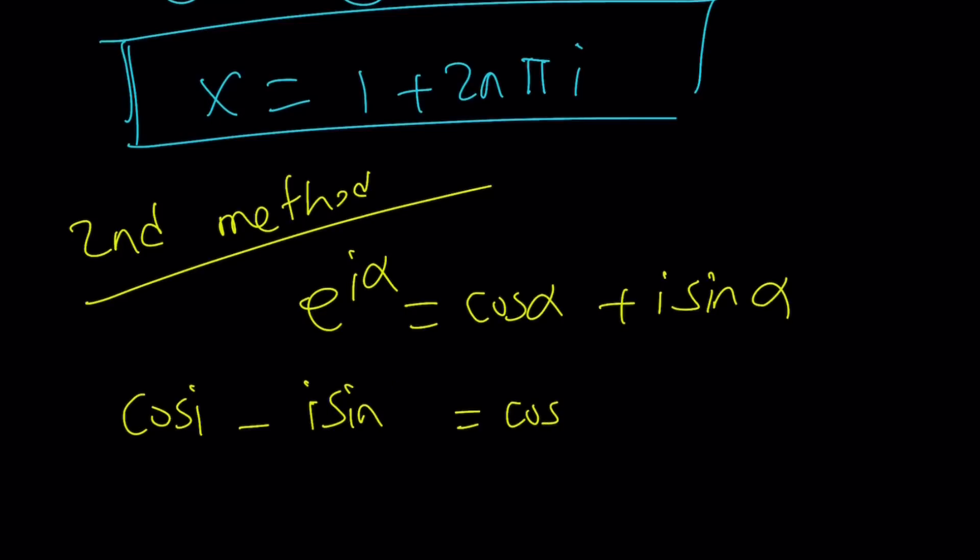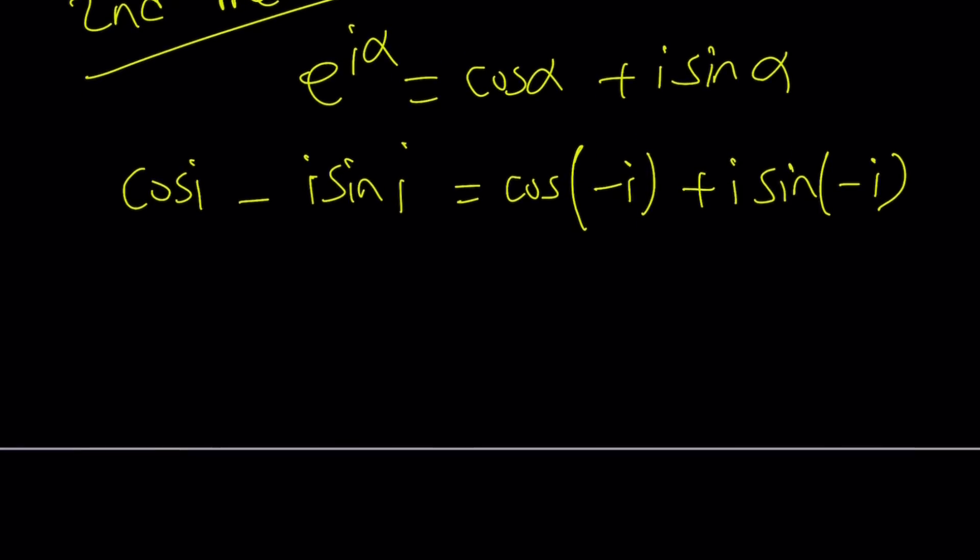I wrote it as alpha. So we can go ahead and write this as cosine of negative i plus i times sine of negative i, because of the even and odd functions, right?